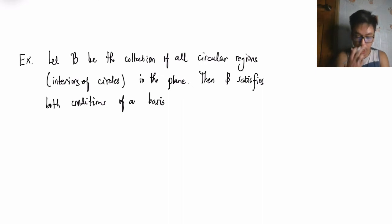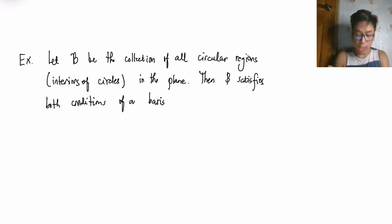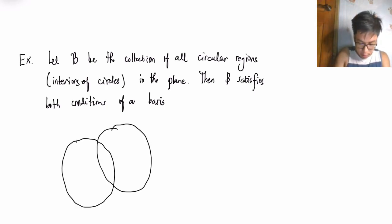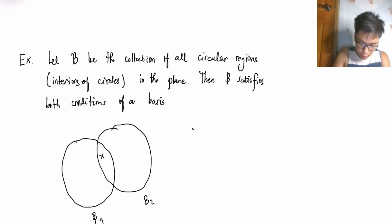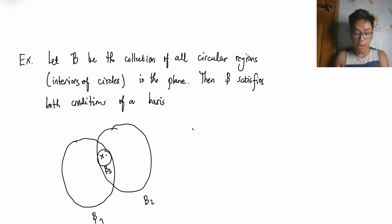Consider script B as the collection of all circular regions — interiors of circles — in the plane. Then B satisfies both conditions of a basis. To illustrate: given circles B1 and B2, you can find an x in their intersection, and there exists another circular region B3 containing x that is contained within B1 ∩ B2. So B is a basis.